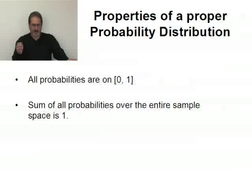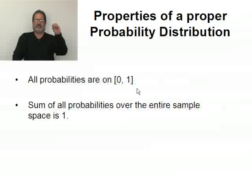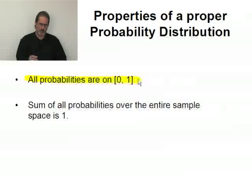All probabilities, or some properties first of the probability distribution. All probabilities are on [0, 1]. Well, this is a standard property of any probability. So when we look at a probability distribution, each and every probability that's listed must be a true probability. They all must fall on [0, 1]. Can't have any negative probabilities listed in this table. Can't have any probabilities bigger than one. The sum of all the probabilities of the entire sample space must be one. That means if I add up all the probabilities, I will get one.